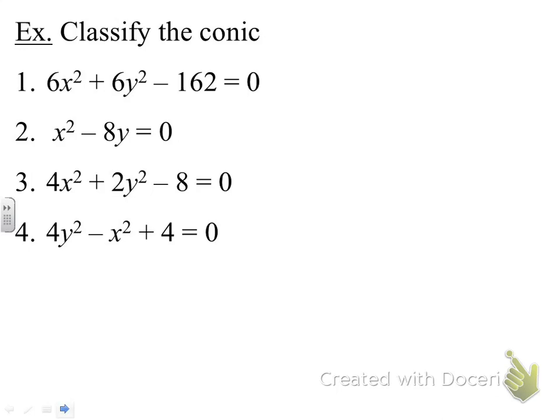For the last one, number 4, ignore everything except the two squared terms. Be really careful—A is the coefficient in front of the x². The A value is negative 1, C is 4. We notice that the two values are opposite signs. Therefore, this equation represents a hyperbola.